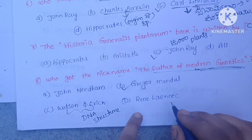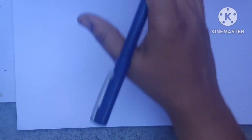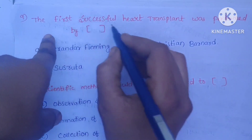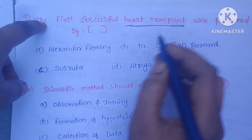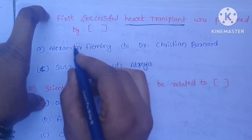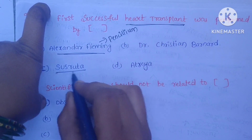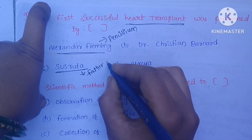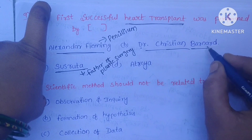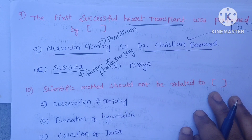Laennec discovered the stethoscope. The next question is: the first successful heart transplantation was performed by — A. Alexander Fleming, B. Dr. Christian Barnard, C. Sushruta Dhatriya. Alexander Fleming discovered penicillin, and Sushruta is called the father of plastic surgery. The correct answer is B. Dr. Christian Barnard, who performed the first successful heart transplantation.